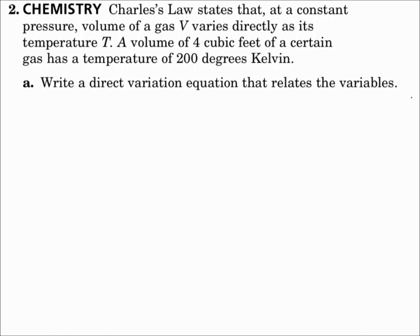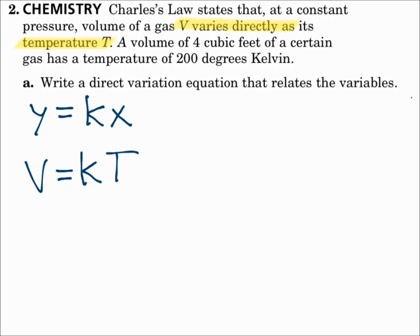Number 2. In chemistry, Charles' law states that at a constant pressure, the volume of a gas varies directly as its temperature T. A volume of 4 cubic feet of a certain gas has a temperature of 200 degrees Kelvin. Part a: write a direct variation equation that relates the variables. It's direct variation, so y equals kx. Applying the new variables: since v varies directly as temperature T, we have v equals k times T.